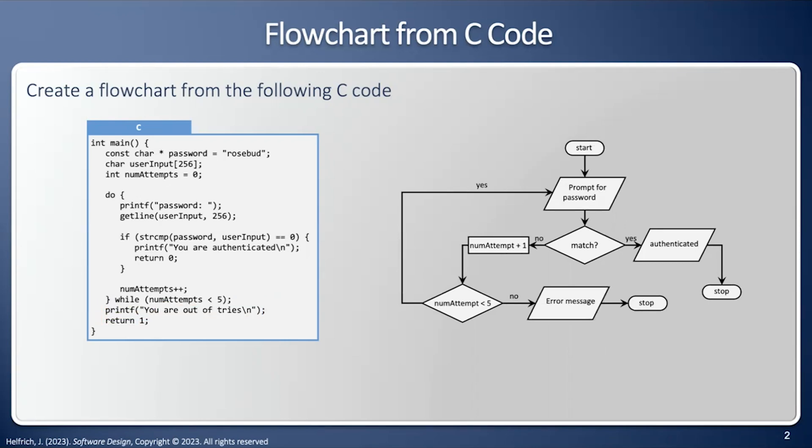From this flowchart, we can see a couple things. First of all, there are two decisions. One is to see if we match or not, and we're authenticated. And the second is to see if we shall continue our loop.